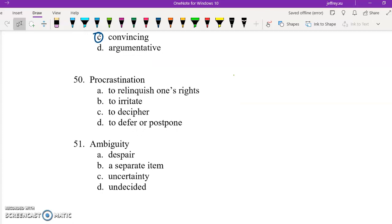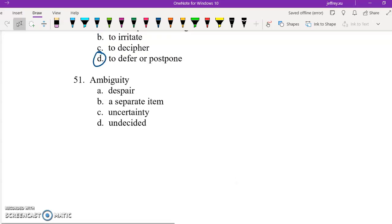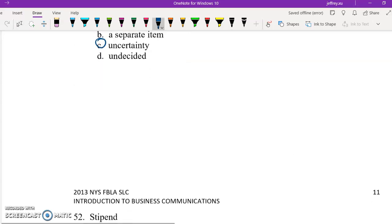50, I'm sure we've all experienced this at one time or another. Procrastination is when you basically leave things to the last minute. So that most closely matches with defer or postpone. 51, if something's really ambiguous, it's not really clear what's correct or what's incorrect. So there's a lot of uncertainty or opaqueness there. So C is your correct answer for 51.